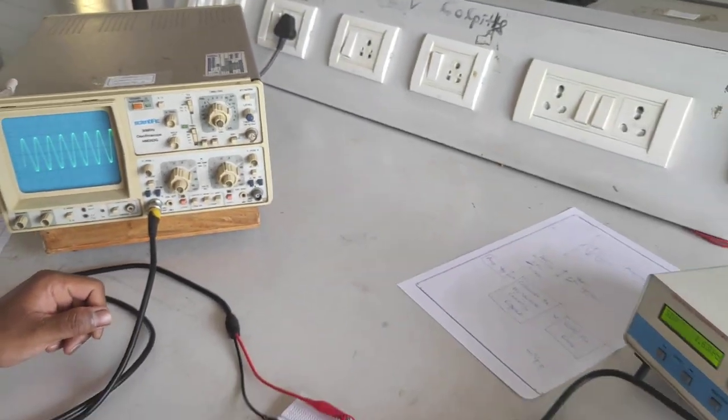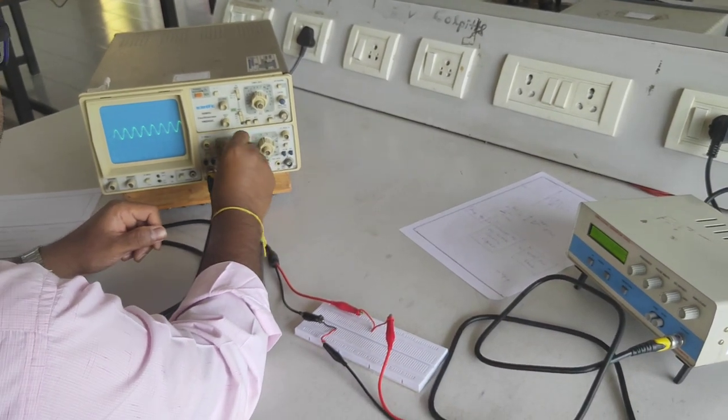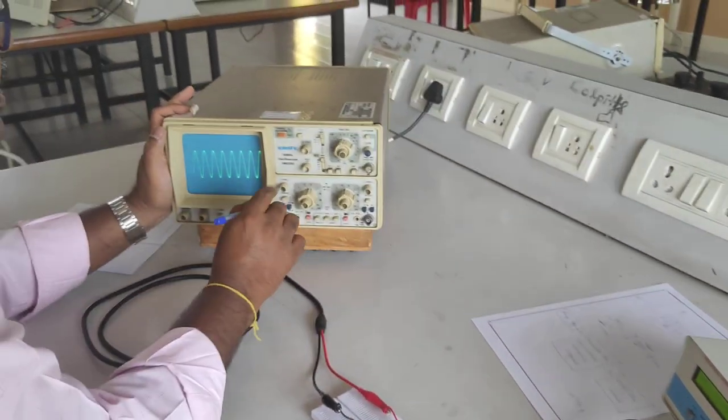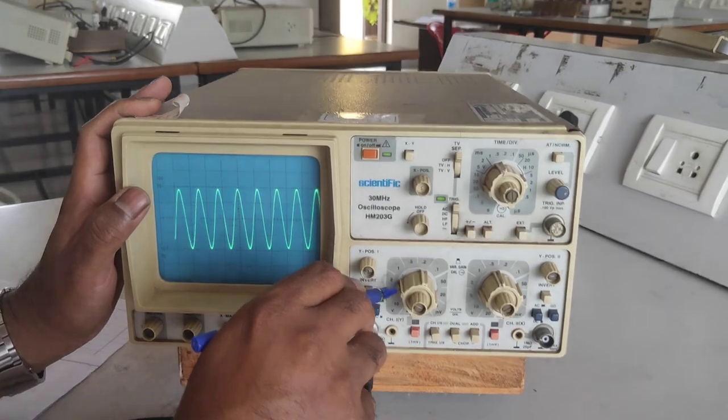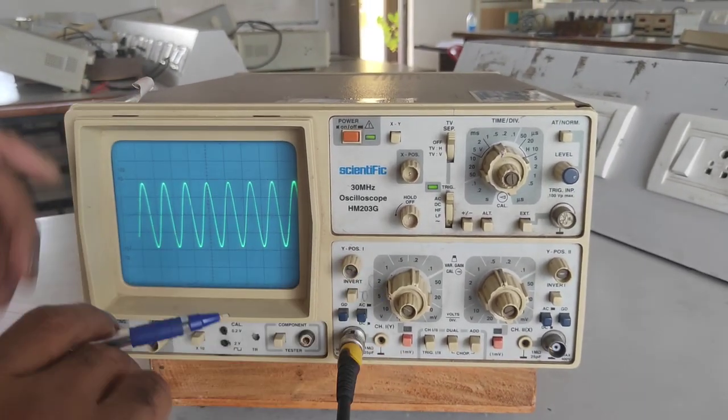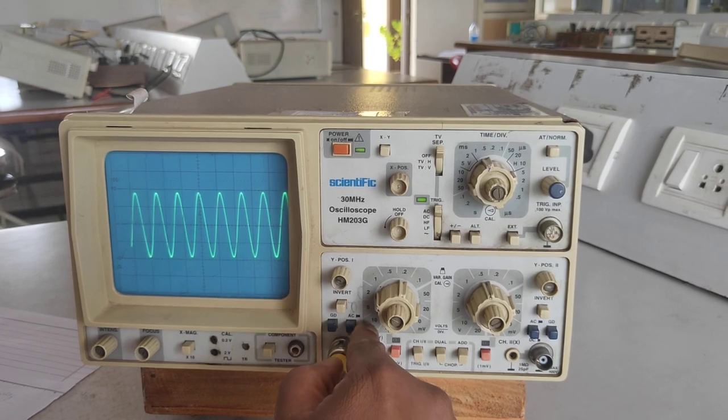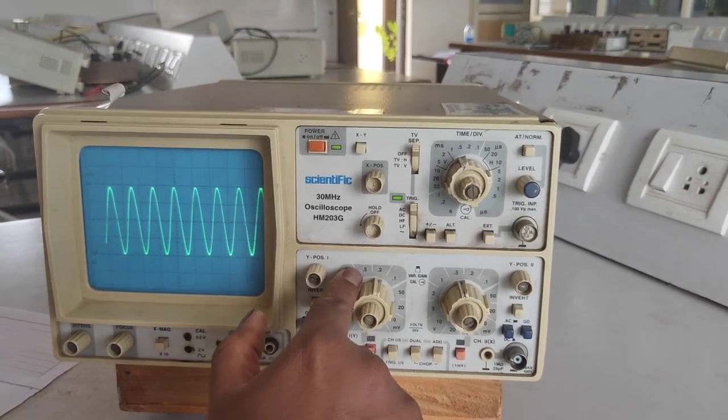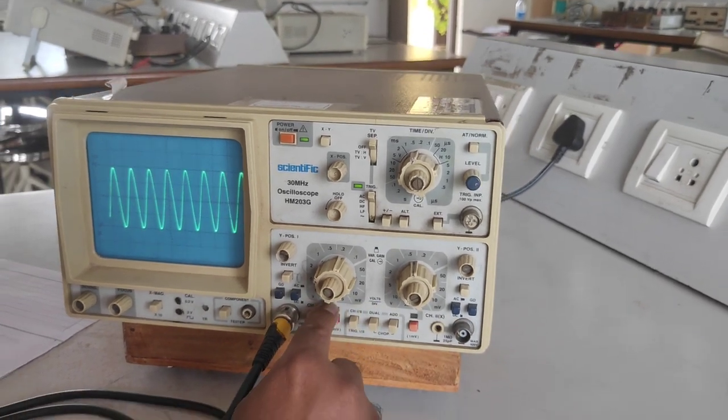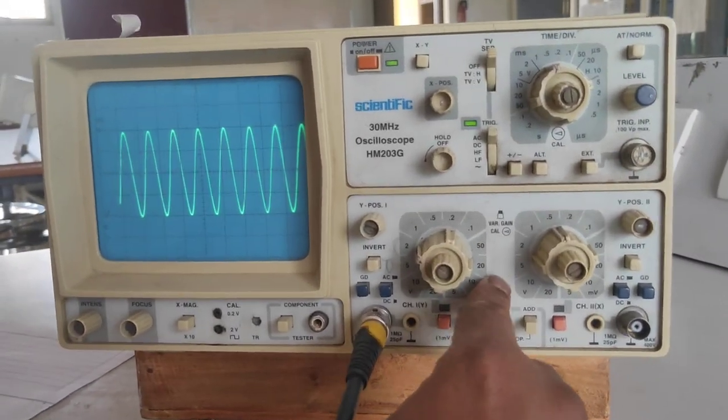Here on function generator, it is amplitude. How to measure the amplitude, I will show you. Here on CRO you can find there will be a white line for measurement. Since it has become old, it is not correctly visible. Here, volts per division - we have to observe. This is 1, 2, 5, 10, 20 volts. And here it is 0.5, 0.2, 0.1 volts, and it is in millivolts.